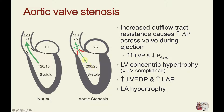As blood is impaired in its ejection across the valve, blood backs up into the left ventricle so that the end diastolic volume is trying to become expanded. That leads to an increase in end diastolic pressure in the left ventricle. Because this pressure is elevated, the left atrial pressure also has to become elevated in order to fill the left ventricle during diastole. We also see a thickening of the ventricular walls — the ventricular walls become hypertrophied.